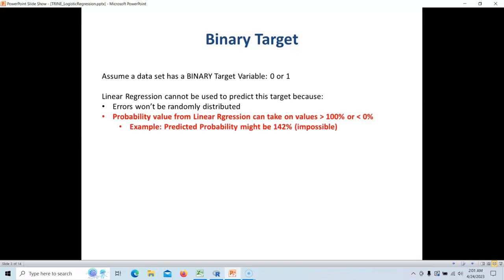For example, you might get a prediction that something is 142 percent likely to occur, and that's obviously impossible. Or you might get another answer like something is minus 37 percent likely to occur. Again, that's impossible. So this is not a desirable thing to use.